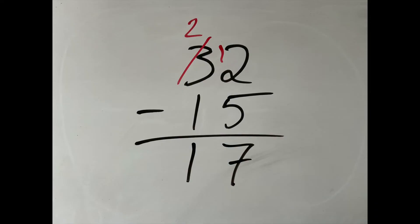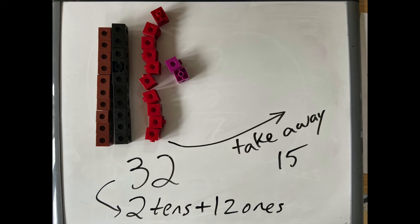Notice that if we build it and actually do this, the process is exactly the same as what we get when we use the algorithm. We change the three tens and two ones into two tens and twelve ones. The talk of borrowing kind of obscures that, but what's really happening is we're just taking the same number and grouping it differently.